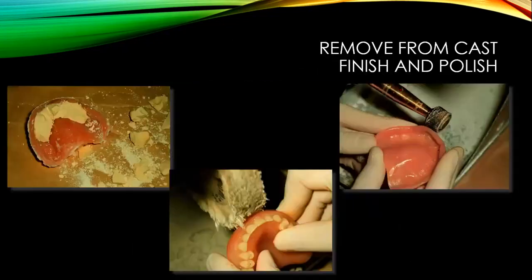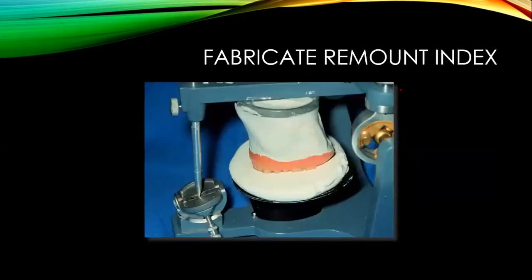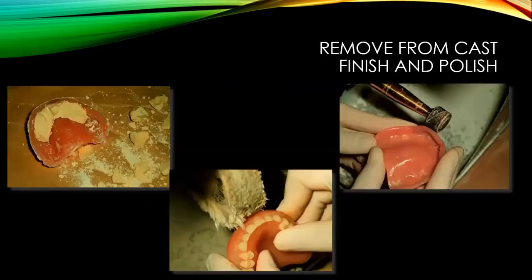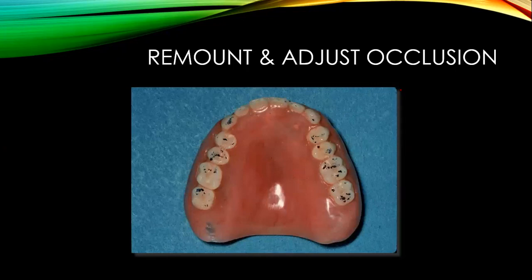After acrylization, you remount the denture on the articulator and adjust for any processing errors. Then you remove the cast, and finish and polish the denture. Finally you insert the denture in the patient, and call the patient for follow-ups. Tissue conditioners can be used if there is inadequate retention.